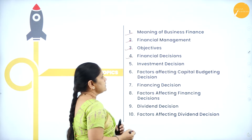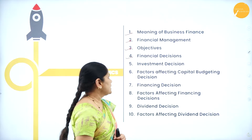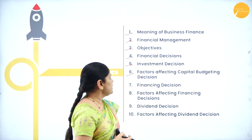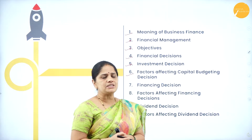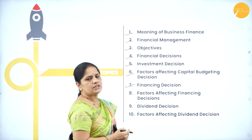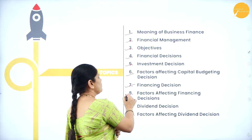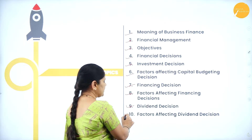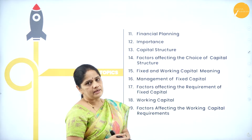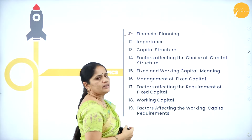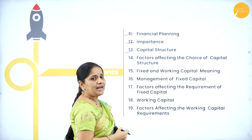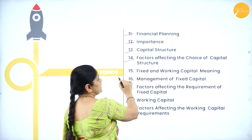Then we will look at what are the financial decisions and investment decisions. We will also be having a discussion on factors affecting capital budgeting decisions - what do we mean by capital budgeting and what factors affect it. Then financing decisions - what is the best way to finance the business and what are the factors affecting it. Then dividend decisions - meaning of dividend, how decisions are taken, and factors affecting them. Then we will look into financial planning and how we can plan finances for a business.